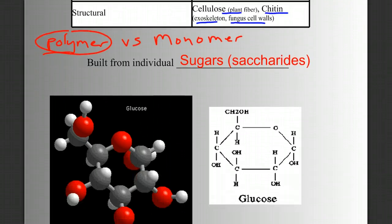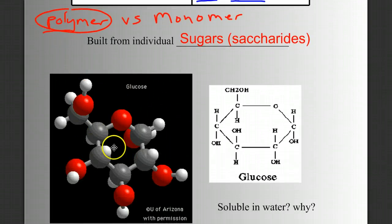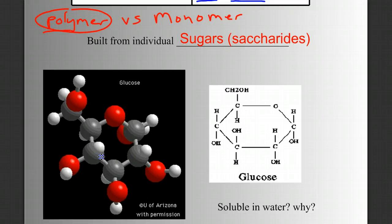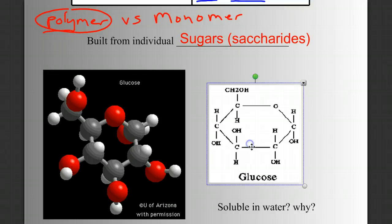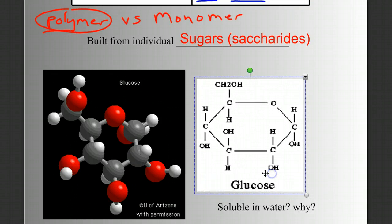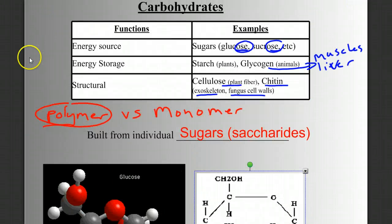Let's look at an example. Here we have a molecular model of a single sugar, or monosaccharide — in this case, it's a model of glucose. Here's a structural diagram showing that same molecule: it's a single unit, a monomer, a monosaccharide. Notice something very interesting: this carbohydrate — look at the word carbohydrate — probably has carbon, hydrogen, and -ate is an indicator that it has oxygen.